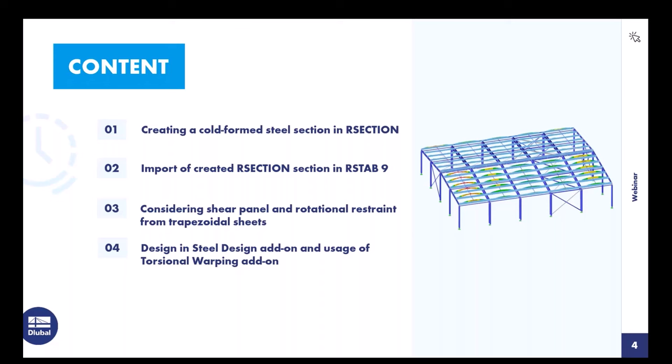The topic of this webinar is the design of cold-formed cross-sections in steel design with warping torsion. I will design cold-formed Z purlins of a steel hall. I'll first show how to model special sections in RSECTION and how to import them into RSTAB, then show the settings for warping torsion analysis, including the rotational restraint and shear panel. Finally, I'll design the purlins in the steel design add-on.